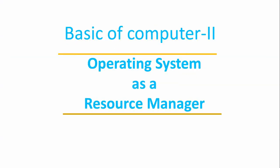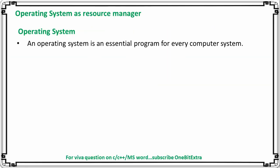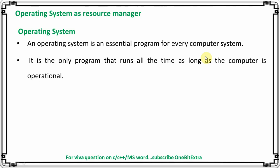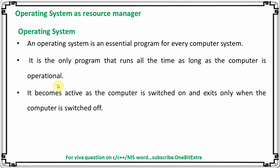An operating system is an essential program for every computer system. It is the only program that runs all the time as long as the computer is operational. It becomes active as the computer is switched on and exits only when the computer is switched off.